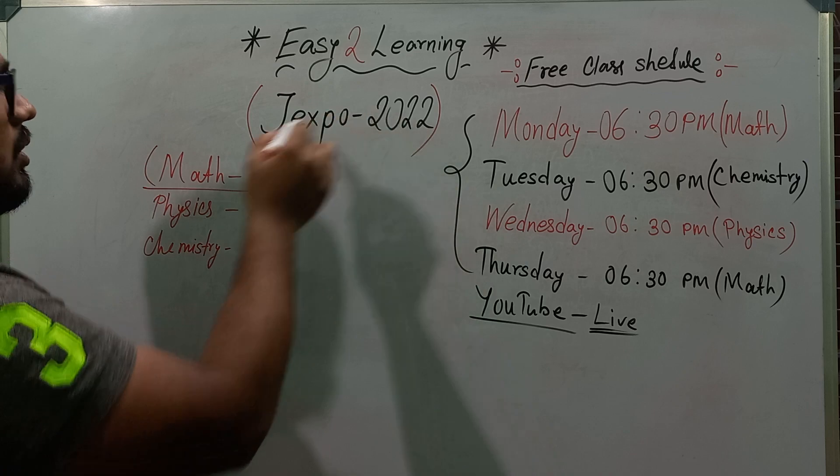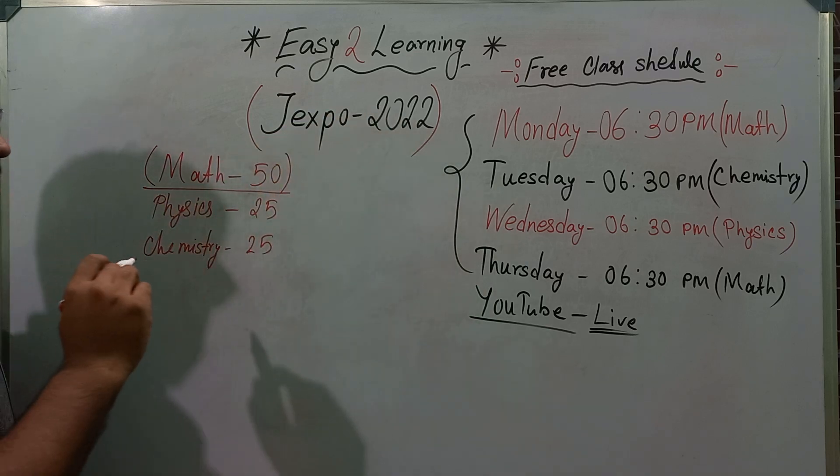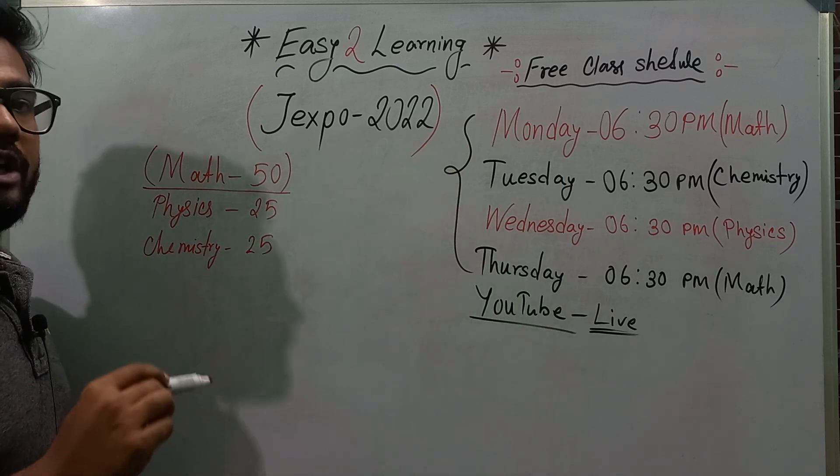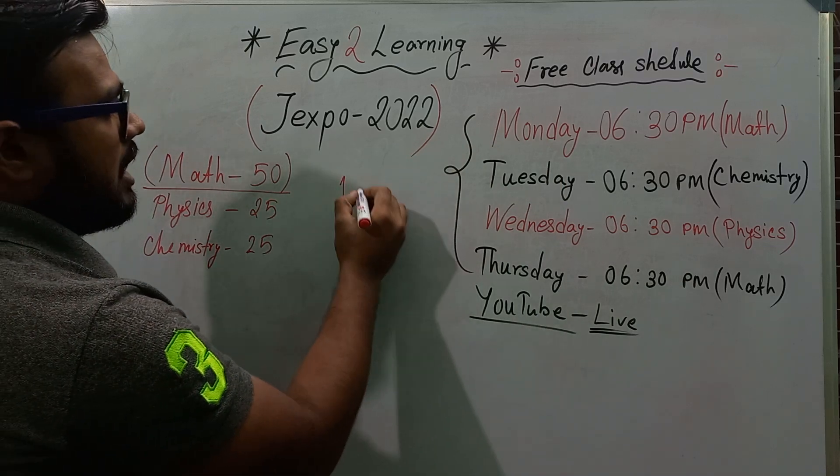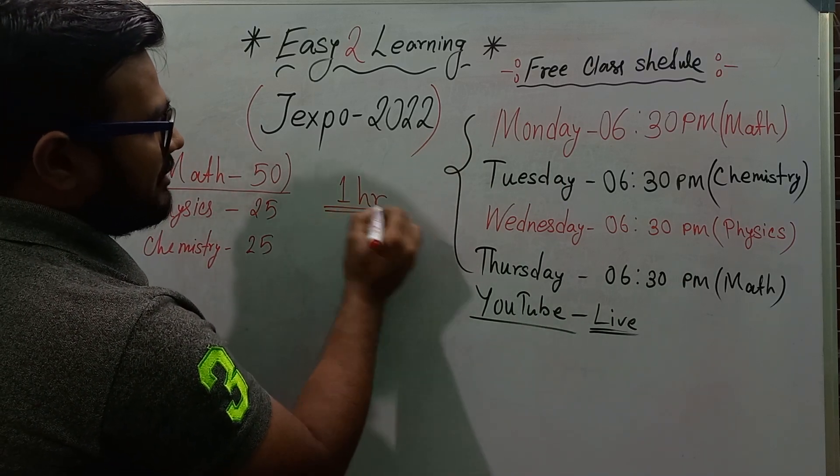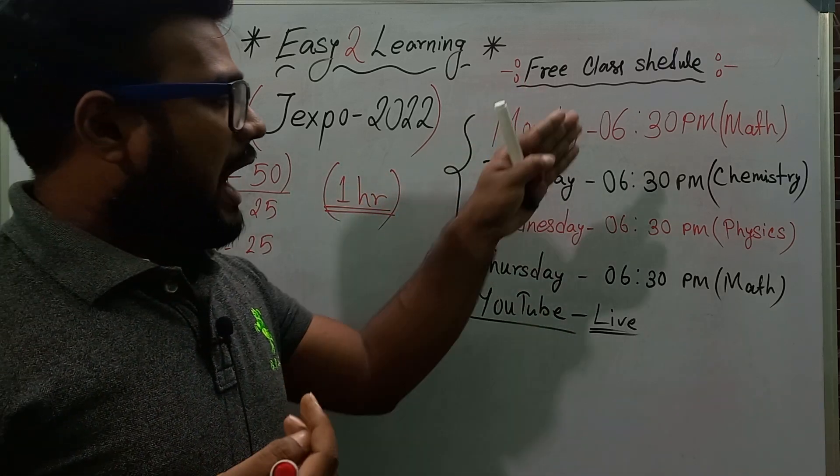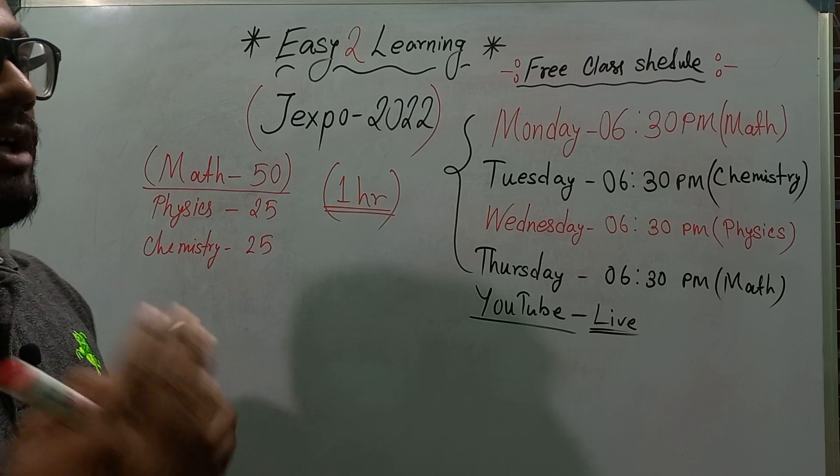And you all know mathematics weight is 50 marks in Jexpo. That's why we have another class in mathematics. So we have a free class, we have one hour class every week. When I read it, we arrange the problem solving and doubt clearance.